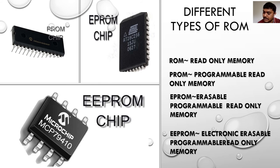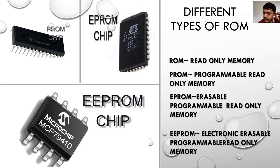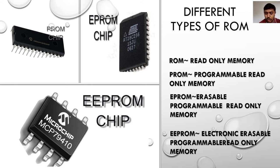In ROM, the information is burned into the memory chip at manufacture time. Once the data has been written, it will not be removed. The data cannot be erased — it can only be read. When the system is switched off, the data in ROM will not be removed; it will be permanently stored, unlike RAM whose data is removed when the system is switched off.